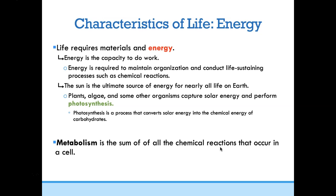On planet Earth, the sun is the ultimate source of energy for nearly all living things. Plants, algae, and some bacteria capture energy from the sun and do photosynthesis — photo means light — converting the energy from light into chemical energy of carbohydrates. Basically, plants take energy from the sun and convert it into sugars they can use to build things and do other reactions required to maintain life. A metabolism is the sum of all the chemical reactions that occur in a cell, and all living things must have a metabolism.